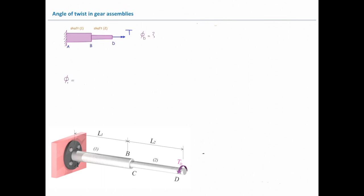Twist in element number 1 is TL over GJ. Similar to that, twist in the second element will be TL over GJ. How much would be the total twist at the end? In this case, point D is connected to point A by these two elements, so I need to add them together. So phi at D is phi 1 plus phi 2.